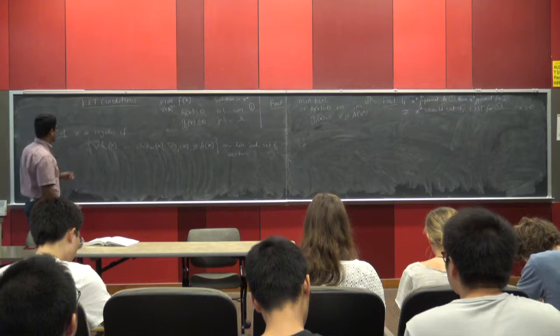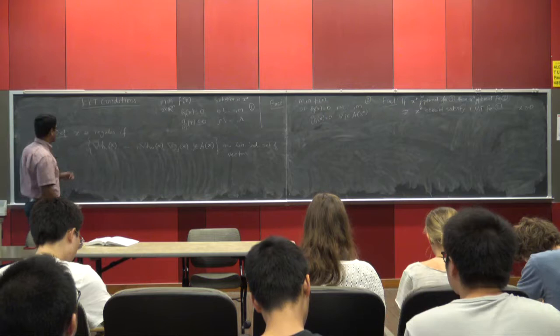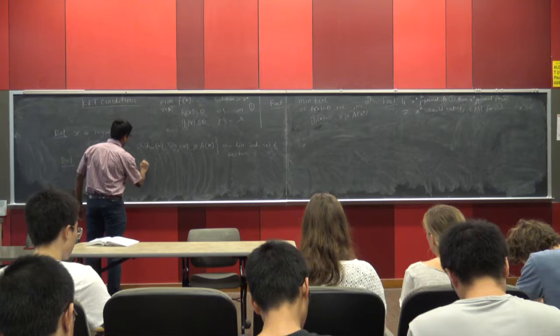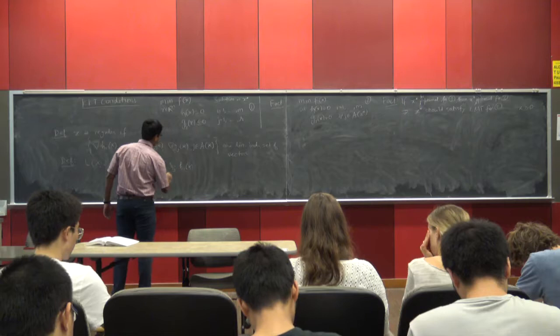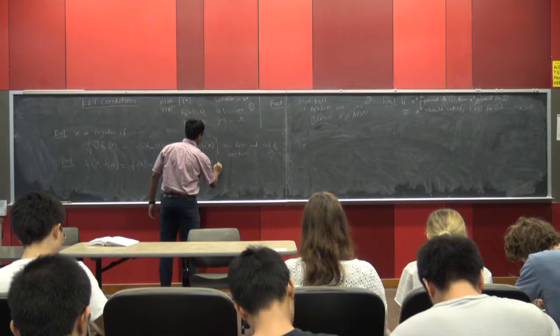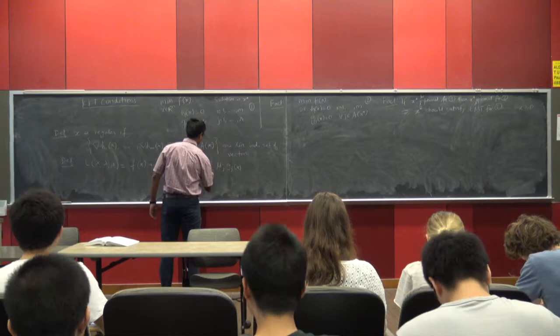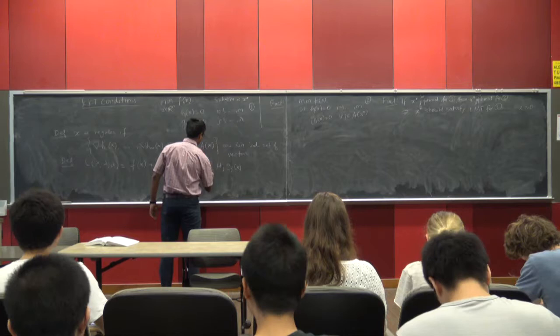Let me also define the Lagrangian for this problem. L(x, λ, μ) is given by f(x) plus the summation of λ_i h_i(x) for i equals 1 to m, plus the summation of μ_j g_j(x) for j equals 1 to r. This is my Lagrangian for this problem.